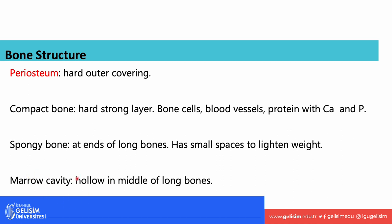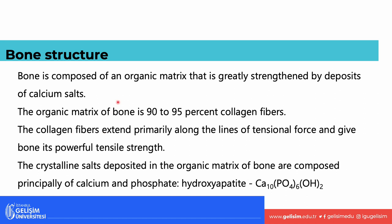We also have the marrow cavity, found in long bones in the diaphysis — this is where the fat, yellow marrow, triglyceride is stored. Bone is made up of an organic matrix that's mostly strengthened by the deposits of calcium salts. Ninety to ninety-five percent of it is collagen fiber, which extends primarily along the lines of tensional forces. This collagen fiber is what gives the bone its tensile strength — in other words, it adds a degree of flexibility to the bone.